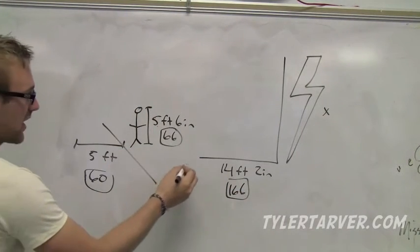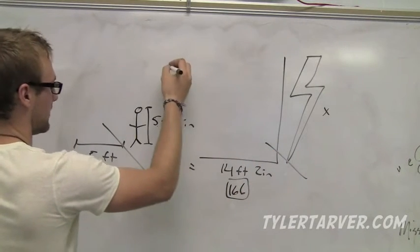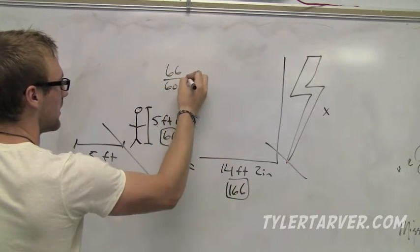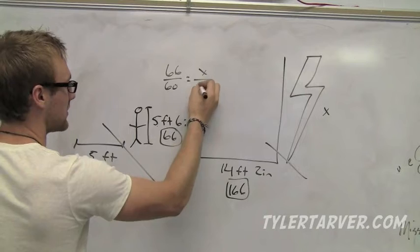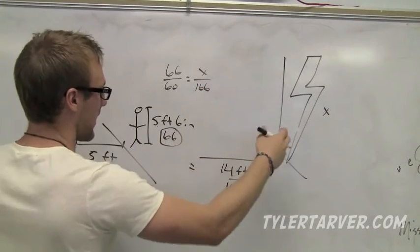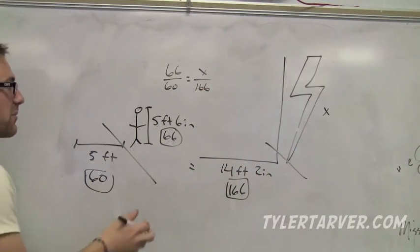Set up a proportion. That over that equals that over that. So 66 over 60 equals x over 166. Match them up like that. Keep it organized. It's pretty easy to set up a proportion.